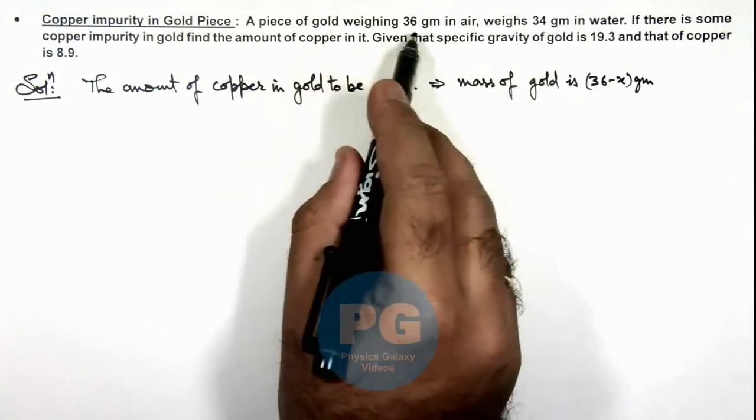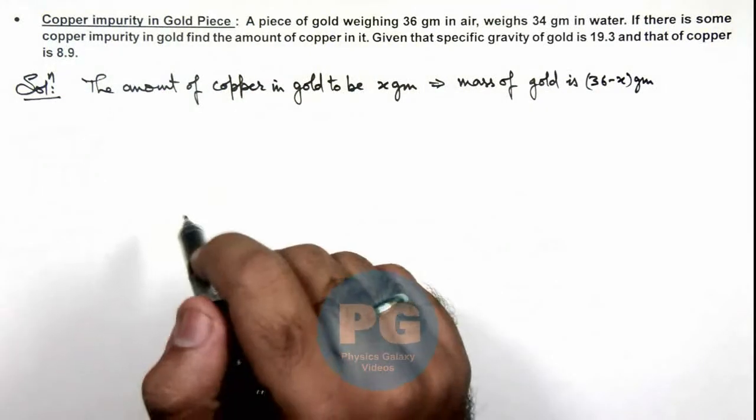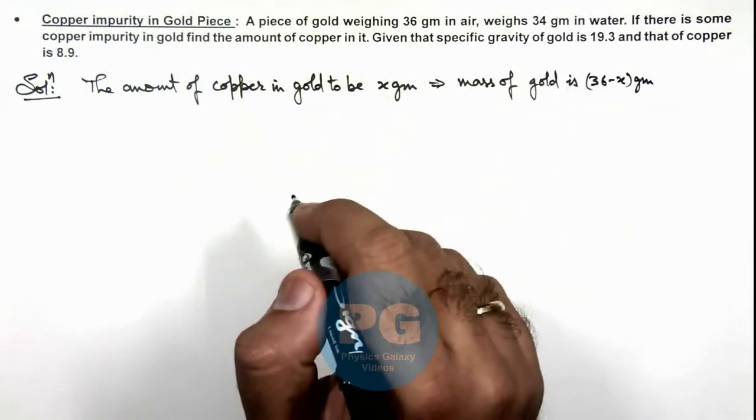Which includes some copper impurity. So if x is the mass of copper, then the mass of gold will be actually 36 minus x.